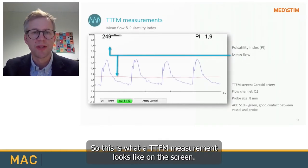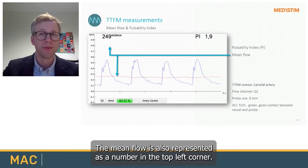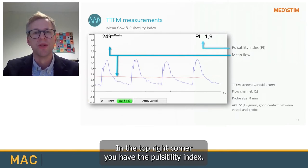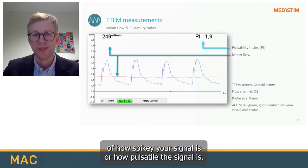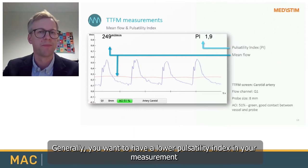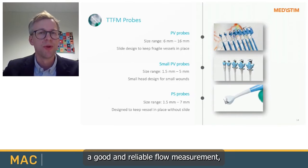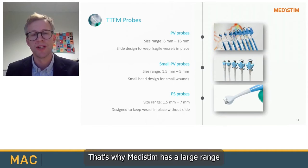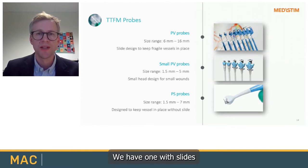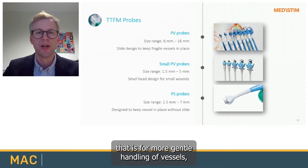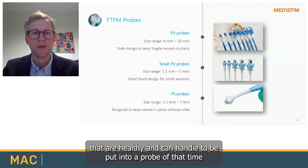This is what a transit time flow measurement looks like on the screen: you have a red curve which is the mean flow curve, represented as a number in the top left corner. In the top right corner, you have the pulsatility index — a measure of how pulsatile the signal is. Generally you want a lower pulsatility index. To have a good and reliable flow measurement, it is important to have a probe that snugly fits your vessel. MediStim has a large range of different probe sizes and designs — one with slides for gentler handling, and one with silicone ears for healthy vessels.